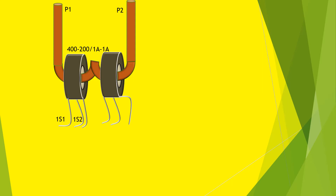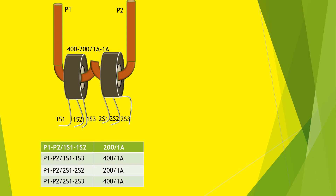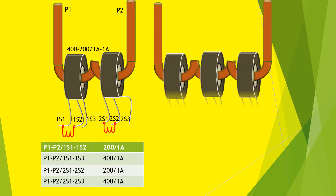The rating is 400/200 by 1/1 ampere, with two settings at the primary side — 400 ampere and 200 ampere — available depending on lead connection at the secondary side. To allow 400 ampere normal current along P1 and P2, secondary leads of both cores are connected at 1S1 and 1S3, and at 2S1 and 2S3. To allow 200 ampere normal current, secondary lead connections are at 1S1 and 1S2, and at 2S1 and 2S2.